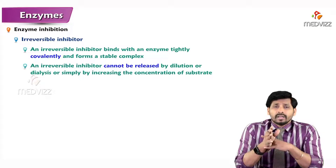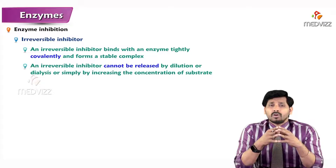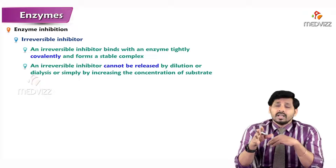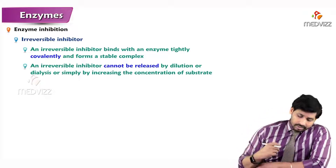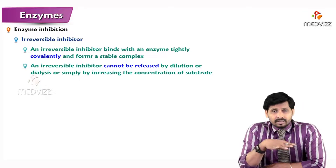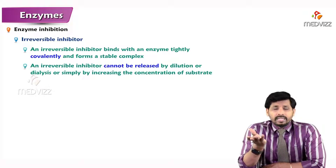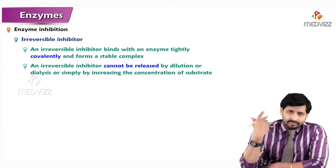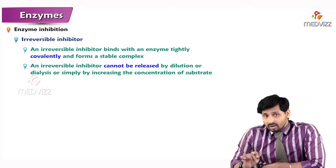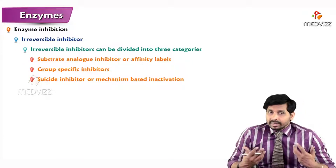Irreversible inhibitors attach to the enzyme by covalent bonds, forming a stable complex which is not easy to degrade. They cannot be released by dilution or dialysis, unlike reversible inhibitors which can be removed by dialysis, dilution, or by increasing substrate concentration. Therefore, irreversible inhibitors can be divided into three categories.